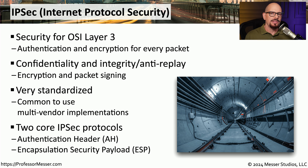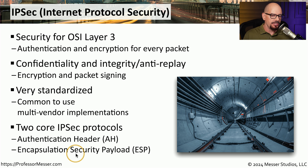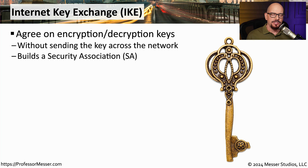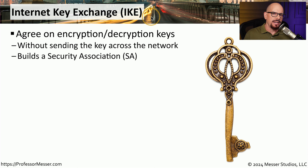When using IPSEC, there are two primary protocols commonly in use. One is the Authentication Header, or AH, and the other is the Encapsulation Security Payload, or ESP. In order for IPSEC to send encrypted data across the network, we first need to create this tunnel by performing a series of steps prior to sending any data. Those steps are referred to as the Internet Key Exchange, or IKE. Internet Key Exchange allows both sides of the conversation to agree on the encryption and decryption keys that will be used for the duration of that VPN tunnel.